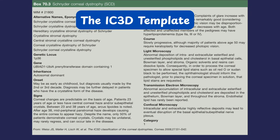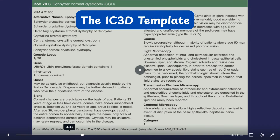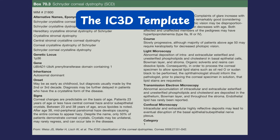Each dystrophy in the IC3D has its own profile page — just like on Instagram and Facebook — like a mini fact sheet summarizing its clinical, pathological, and genetic details. It also has an OMIM reference number for deeper research.